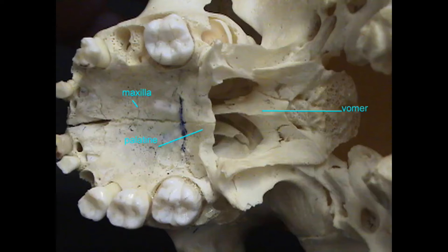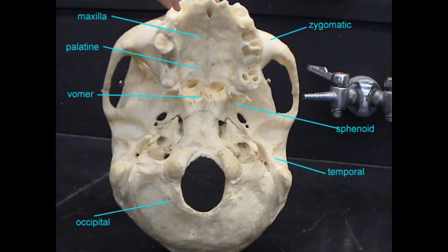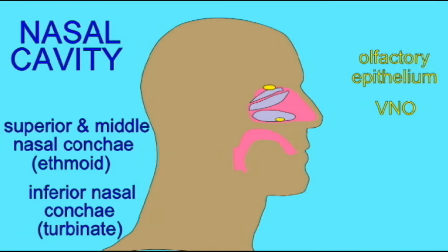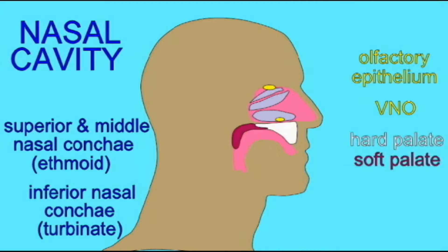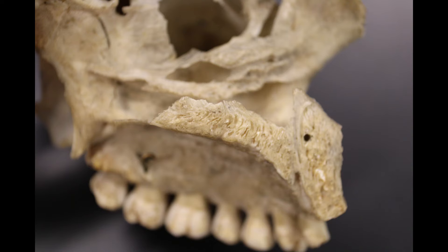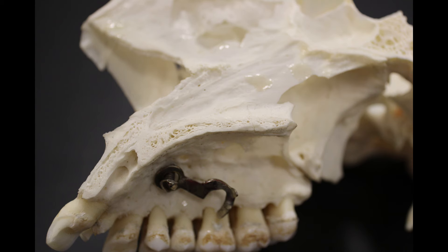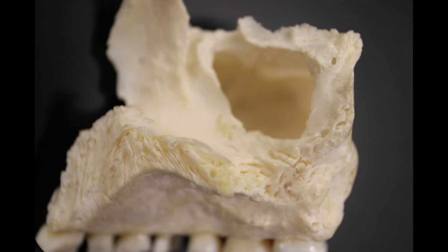Thus, the hard palate, which separates the oral and nasal cavity, is made of the small palatine bone and the palatine process of the maxillary bone. This helps form the roof of the mouth.